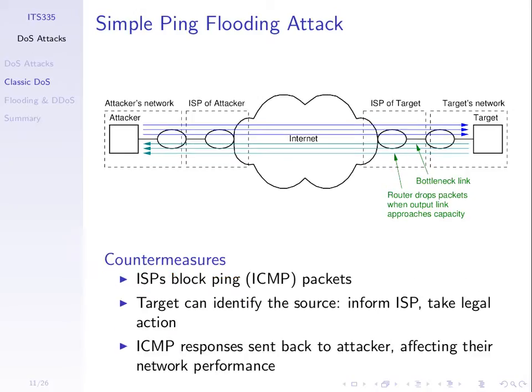How do we stop it? Get internet service providers to block ping packets. If the ISP of the attacker doesn't allow their customers to send out ping packets, that would stop such an attack. But ICMP is developed for managing and error reporting on the internet — it has a legitimate purpose. So stopping it has other consequences and is not always possible. ISPs don't necessarily do that all the time; some do, some don't.